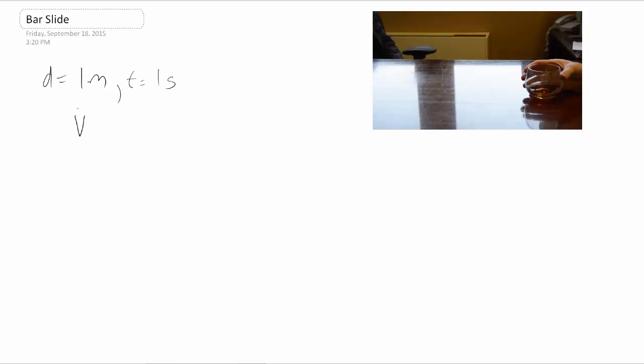We know that the average velocity is just equal to the change in distance over the time. Or in this case, it's just one meter over one second. So, the average velocity was one meter per second. Okay.